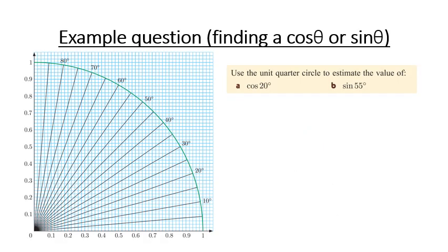So here's an example of how we can use a unit quarter circle to actually find out the value of cosine or sine if we're given the angle. So for example, if we're going to look at cosine 20, we can see that 20 is here.